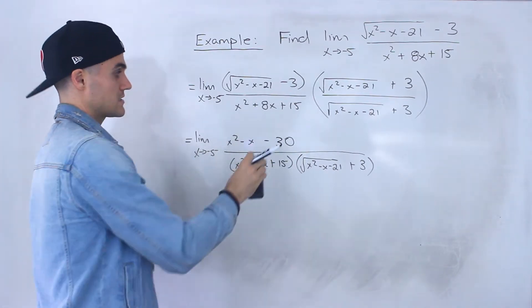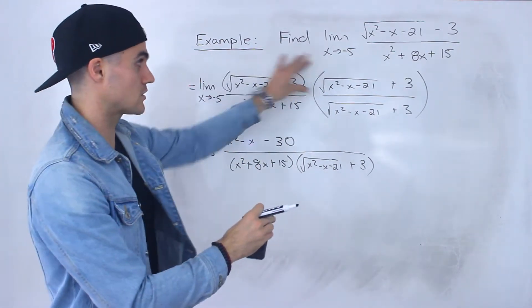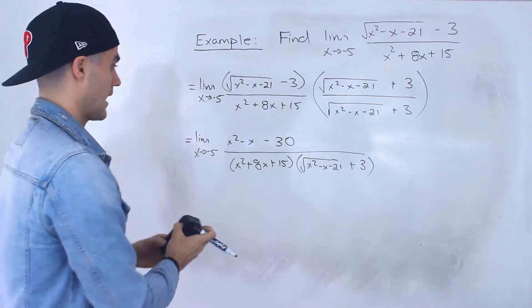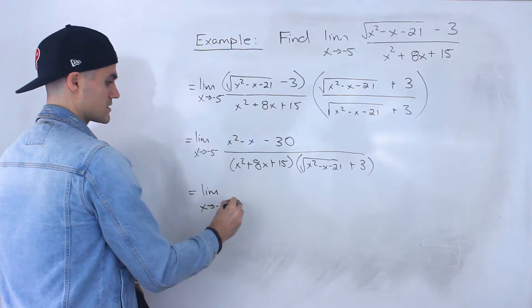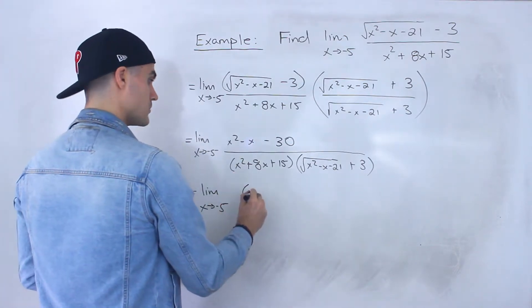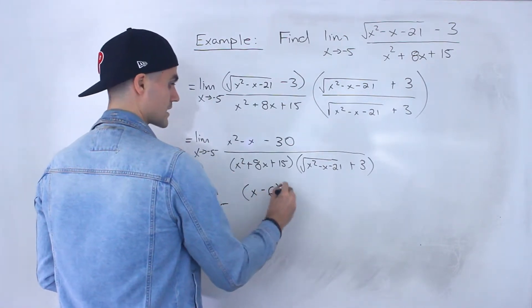So x squared minus x minus 30 is what we end up with after we rationalize the numerator. And then from here what we can do is we can factor. So we could factor the numerator, that would be x minus 6 times x plus 5.